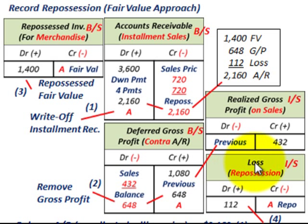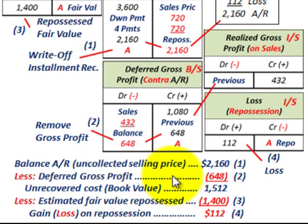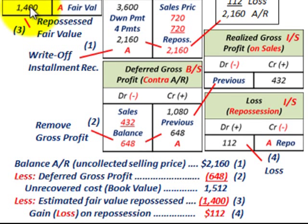The loss on repossession goes against our income statement. We debit the loss account for $112. Our accounts receivable balance was the uncollected selling price of $2,160, our deferred gross profit was $648, and our estimated fair value was $1,400 recorded in the repossessed inventory account. Working through the arithmetic, our loss on repossession was $112 — that's how we arrived at the $112 debit.